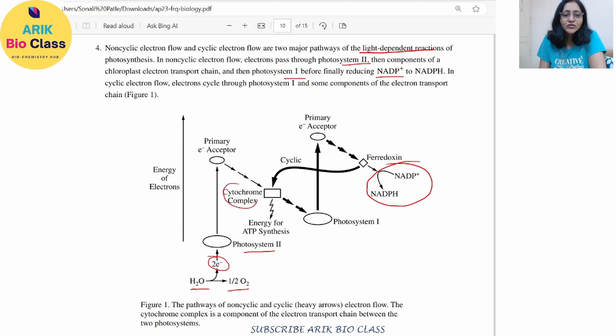then they travel through the different components of the electron transport chain and then they travel to the photosystem I. So here, absorption of light happens twice, one at the photosystem II and second time at the photosystem I.